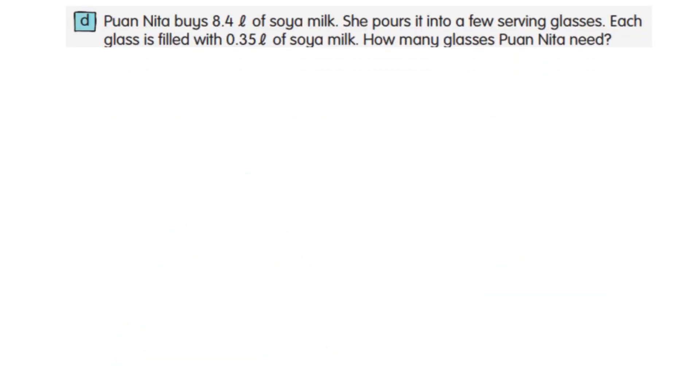Question D: Puan Nita buys 8.4 liters of soy milk. She pours it into a few serving glasses. Each glass is filled with 0.35 liters of soy milk. How many glasses does Puan Nita need? So here we need to divide.